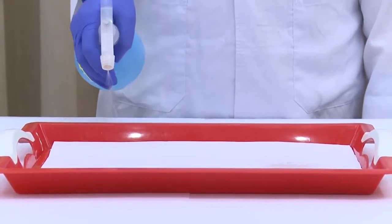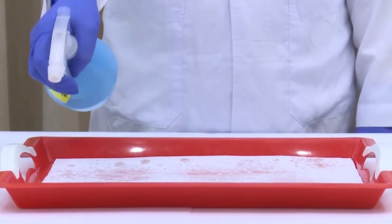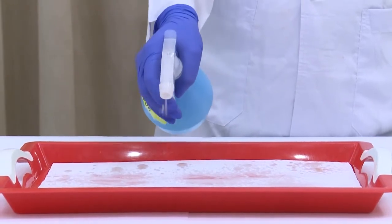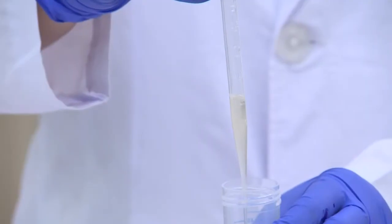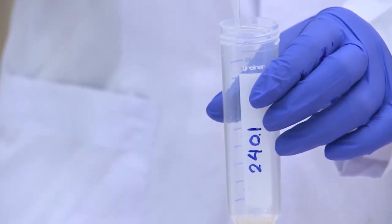First, place an absorbent paper on the sample preparation area and then spray 1% sodium hypochlorite solution on it. Transfer sputum from leak-proof sputum container to a 50 mL falcon tube.